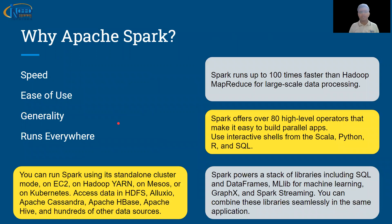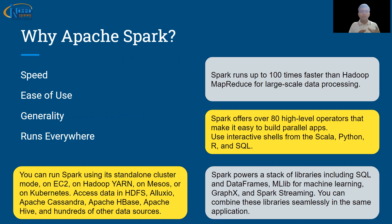Now, let us try to understand why we should go for Apache Spark. The first reason is speed. If you look at Hadoop MapReduce, it was a wonderful solution and still is today. But in terms of speed, Apache Spark increased the speed from a minimum of 10 times to 100 times faster than Apache MapReduce. The speed of execution is fabulous.